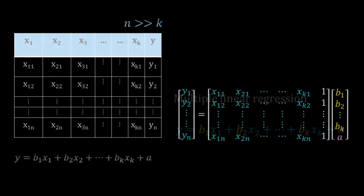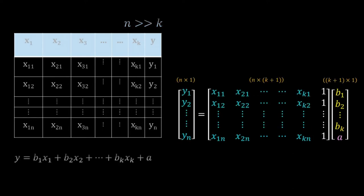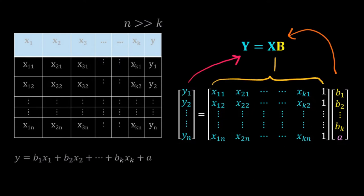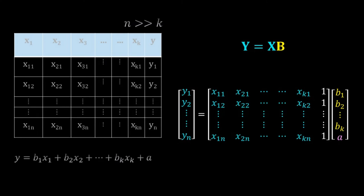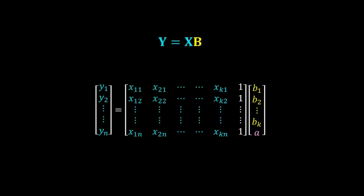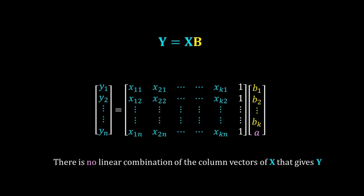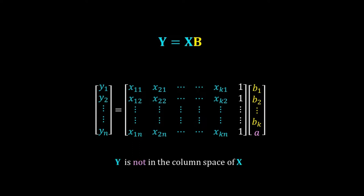We will use the linear algebra based method for this regression, so let me formulate the problem in matrix notation. We have one column vector for values of y, another column vector for the coefficients, and an n by k+1 matrix for xs and 1. We can represent this system of equations in short form as y = X times b. Like simple linear regression, this system is also over-determined — in linear algebra terms, y is not in the column space of X.